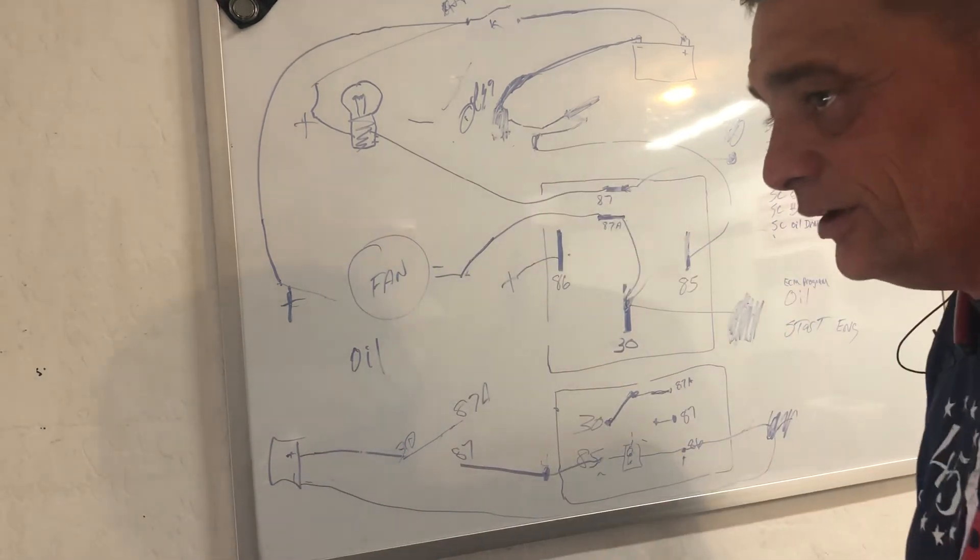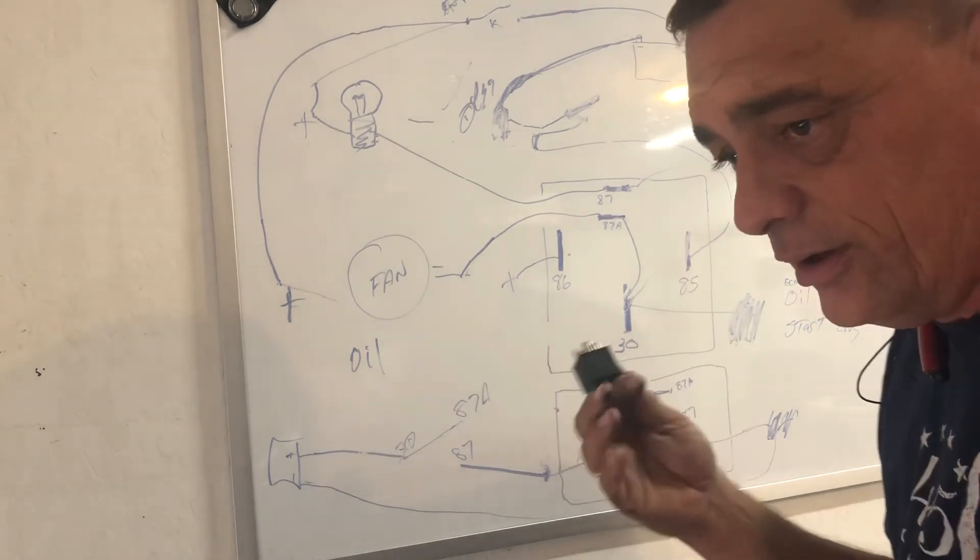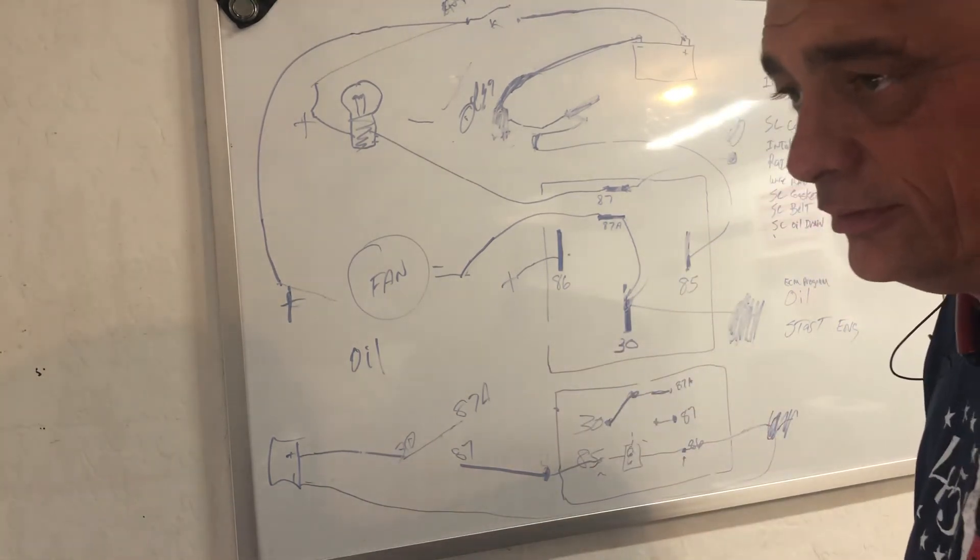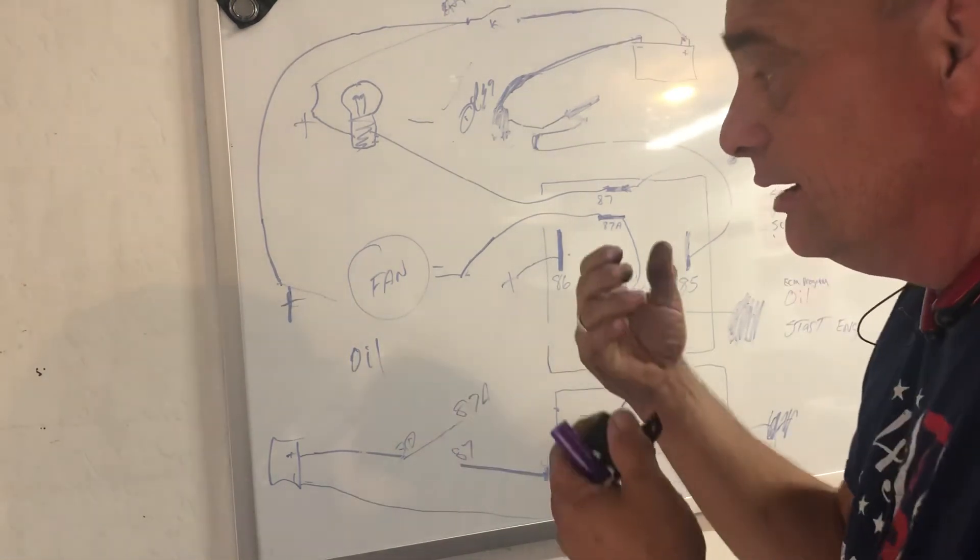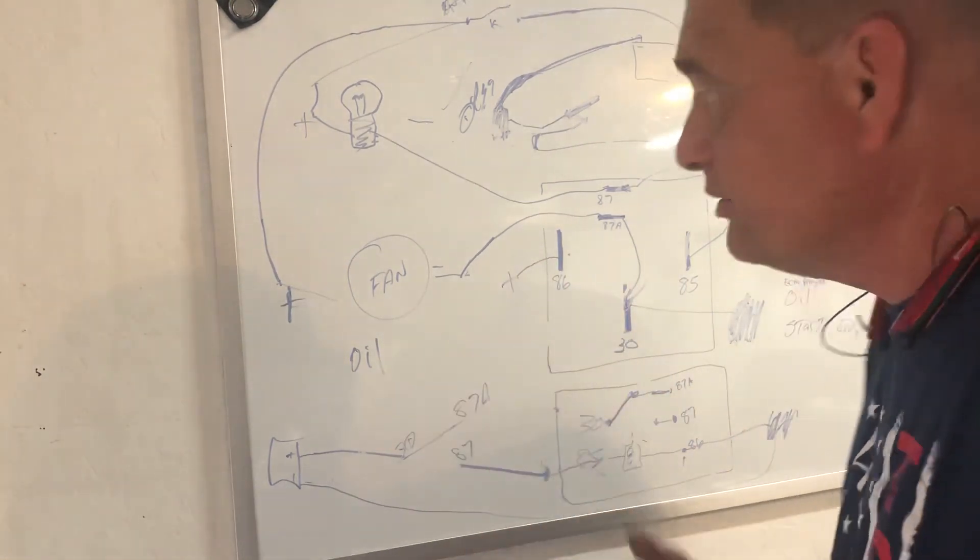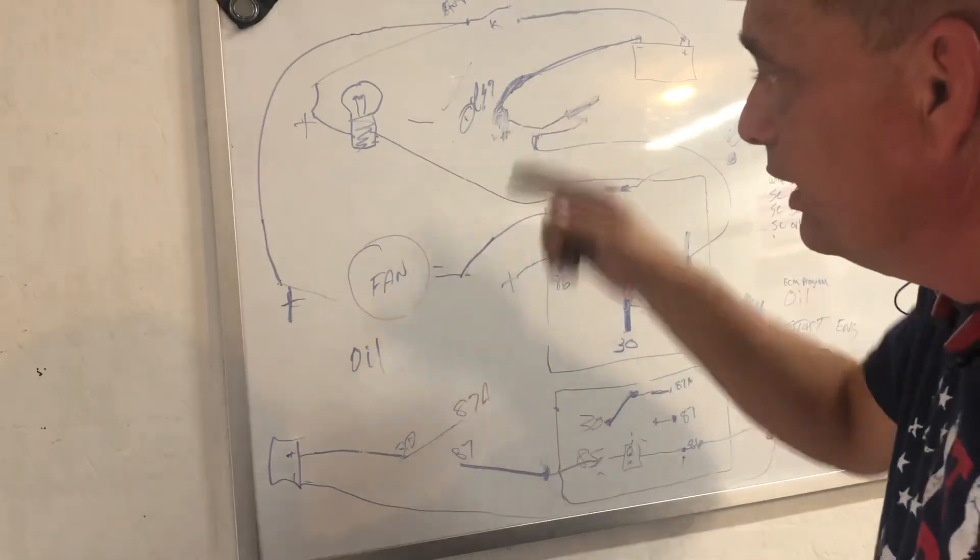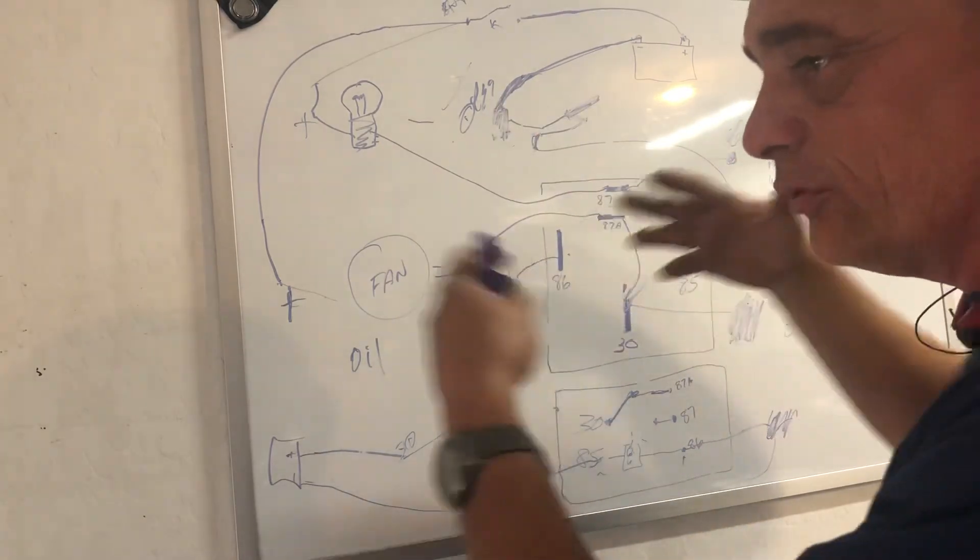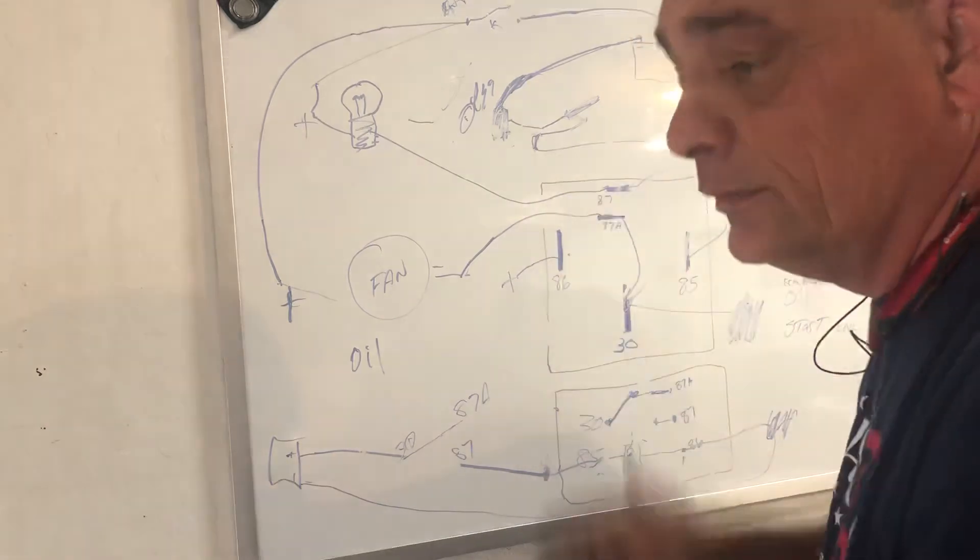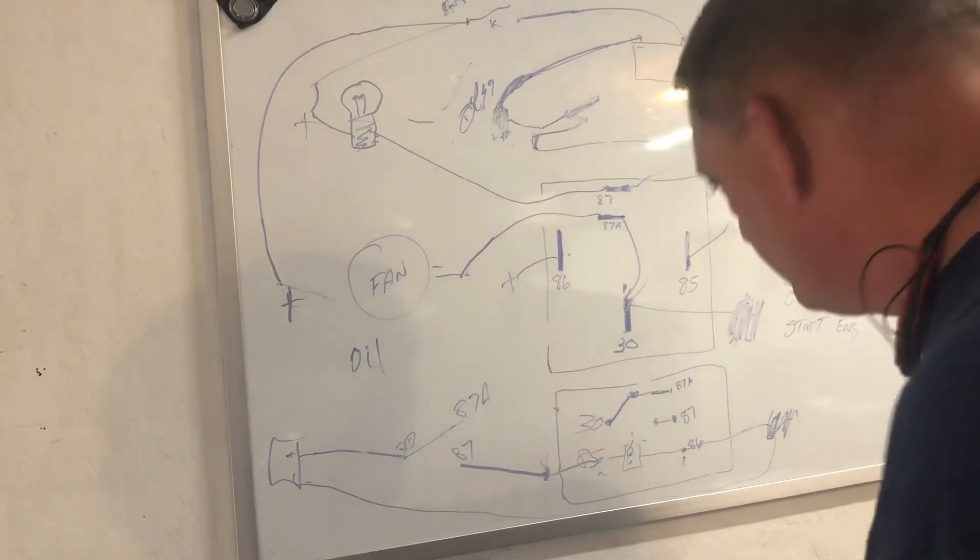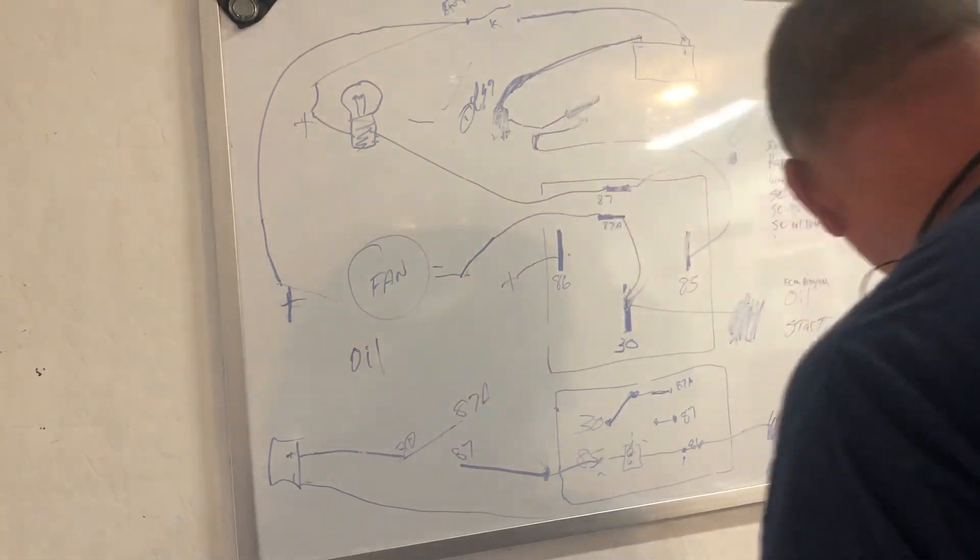So basically what you don't realize is I just explained exactly how a laptop works. Okay, a laptop is just a million relays driving different things depending on what this is telling it. So this one item, whether it's on or off, could drive 20 different items to be on or off. So there you go, I just explained the whole theory of computers too.